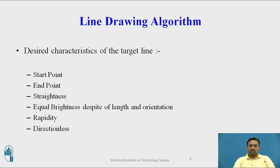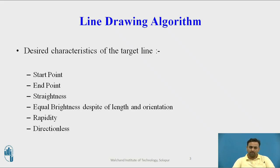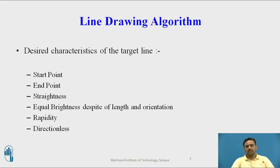Let us discuss about the line drawing algorithm. At the very start, we will discuss about what should be the desired characteristics of the target line. The first point is the start point — this point is the initiation of any line. We can define it by the x and y coordinate, using which we can define the starting point of any line.